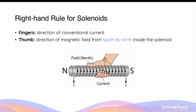This is directed from the south pole to the north pole of the magnetic field. In this diagram, we can see the person is curling the fingers in the same direction as the conventional current running through the coiled wires, and when we point our right thumb using the right-hand rule, it is always pointing towards the north pole of the magnetic field.